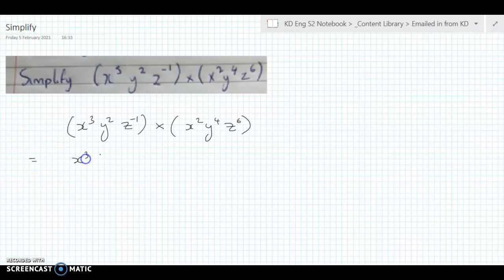This is x cubed multiplied by y squared multiplied by 1 over z to the power of positive 1, so we just leave it blank there, multiplied by x squared multiplied by y to the power of 4 multiplied by z to the power of 6.